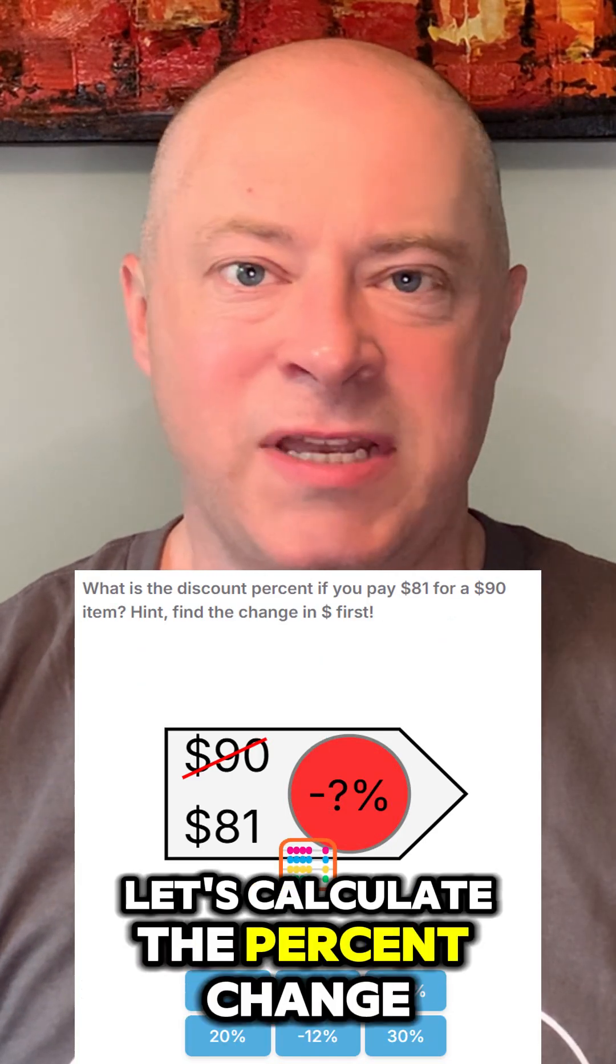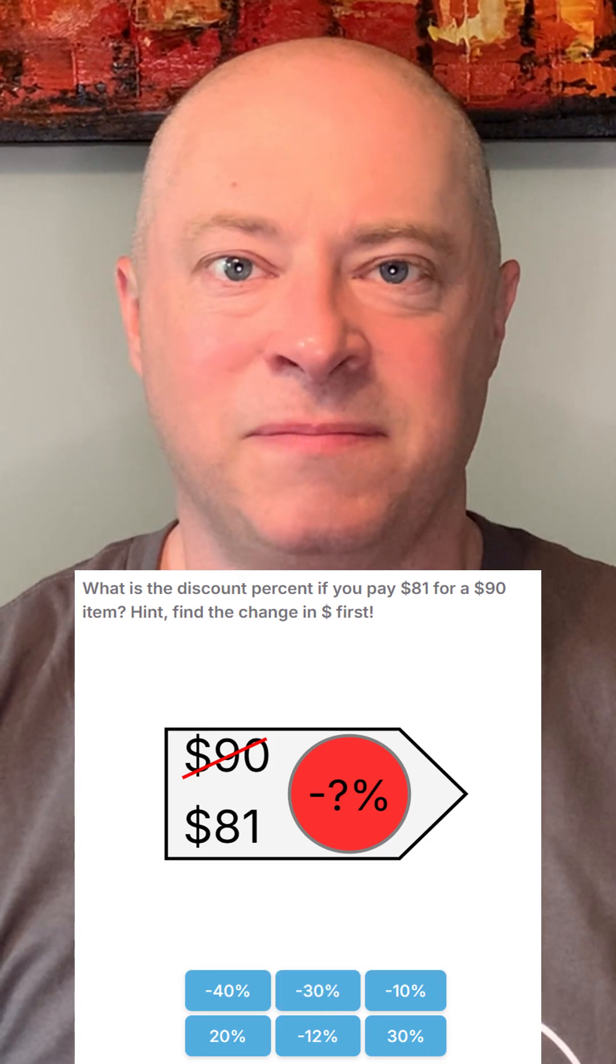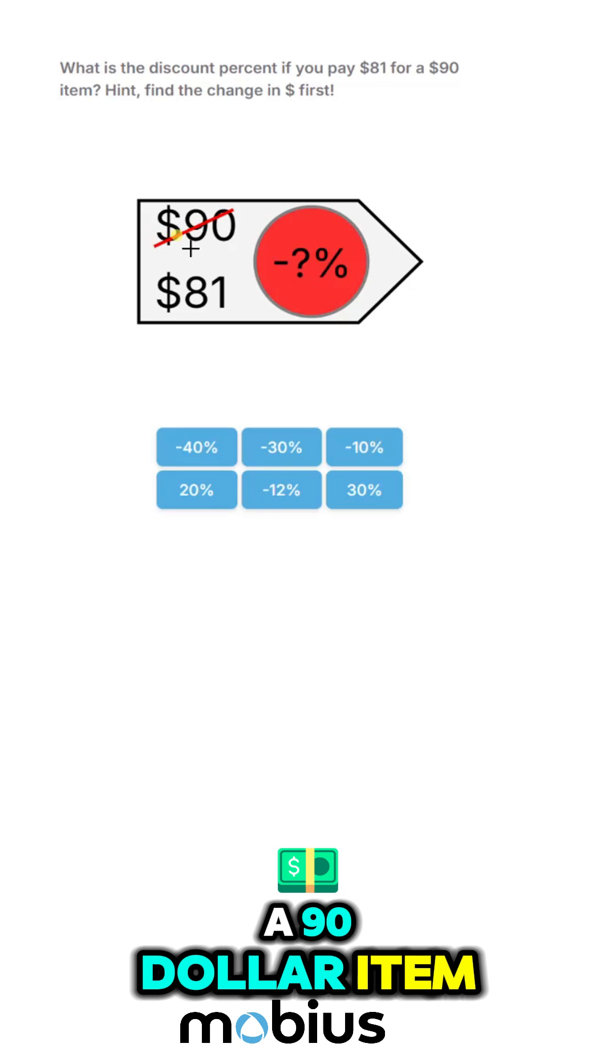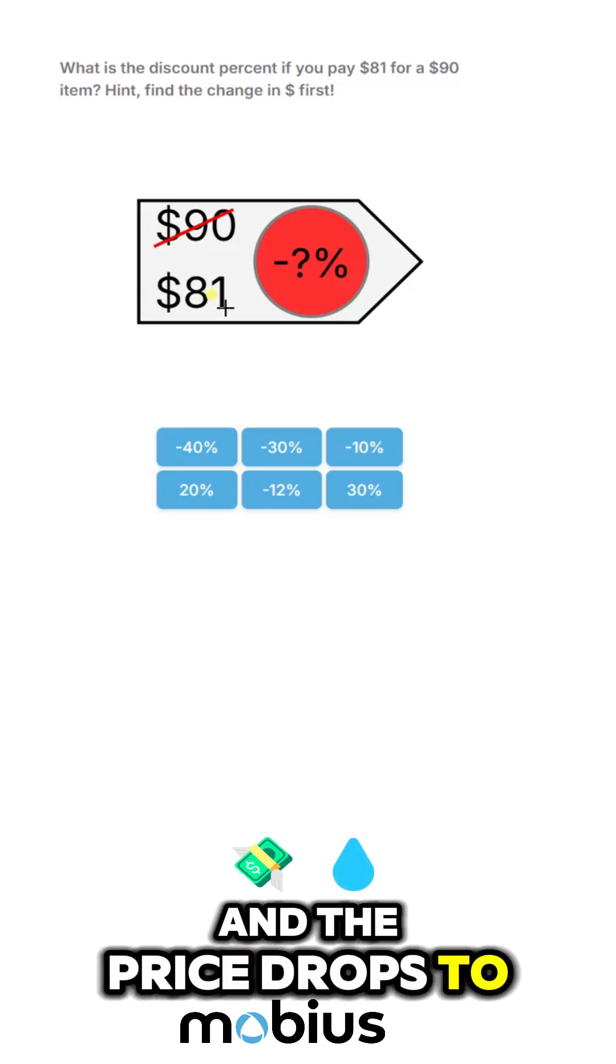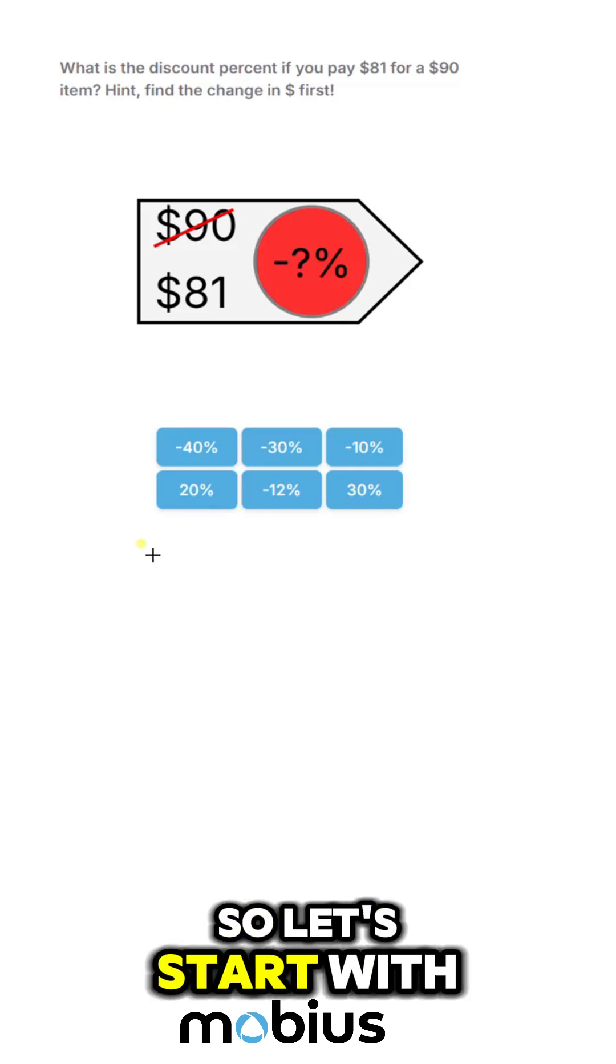Let's calculate the percent change when we know the starting price and a final price. Okay, we start with a $90 item and the price drops to $81, so let's find what the discount is. So let's start with our